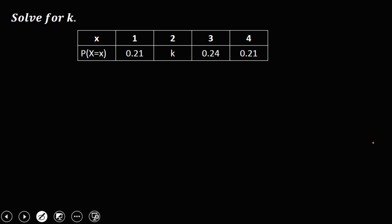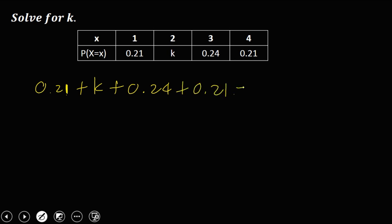Then for this problem, solve for K — add all the probabilities and equate to 1. So we have 0.21 plus K plus 0.24 plus 0.21 equals 1. Then simplify by combining like terms: 0.21 plus 0.24 is 0.45, plus 0.21 gives 0.66.